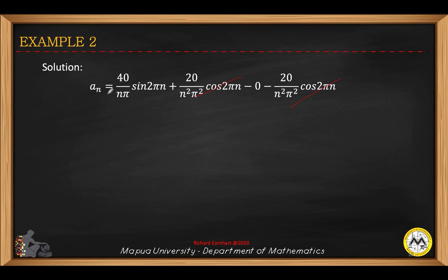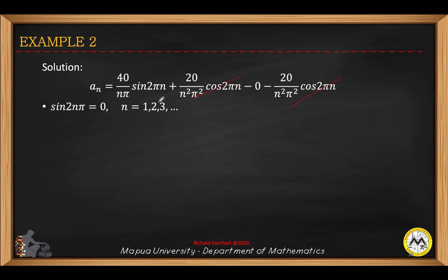Note that for n equals 1, 2, 3, sin(nπ) will always be zero because the terminal angle always lies on the positive x-axis, giving sin(2nπ) equals zero. Therefore, the sine term is zero, and a sub n is equal to zero.